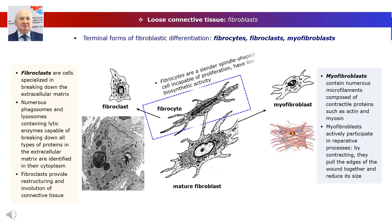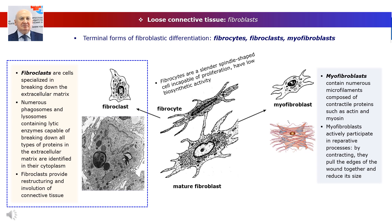A fibrocyte is a slender, spindle-shaped cell incapable of proliferation, with long thin processes. The cytoplasm contains a poorly developed synthetic apparatus, a significant amount of autophagosomes, and lipofuscin granules. Fibrocytes have low biosynthetic activity and contribute to maintaining the stability of the extracellular matrix. Fibroclasts are cells specialized in breaking down the extracellular matrix; numerous phagosomes and lysosomes containing lytic enzymes are identified in their cytoplasm. Fibroclasts provide restructuring and involution of connective tissue and are particularly numerous in young granulation tissue and scars undergoing regression.